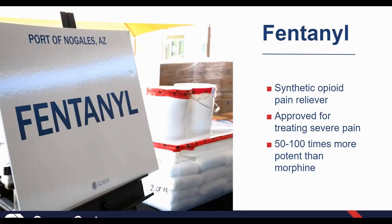Fentanyl is a synthetic opioid pain reliever — not natural; someone had to process and make it. It was approved for treating severe pain and is 50 to 100 times more potent than morphine. For example, five milligrams of morphine versus 50 micrograms of fentanyl — they should have a much greater analgesic effect with the fentanyl. We give morphine in milligrams versus fentanyl in micrograms, illustrating the difference in concentration and potency.